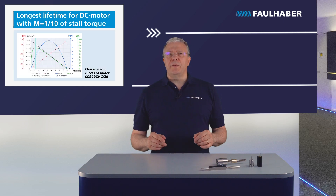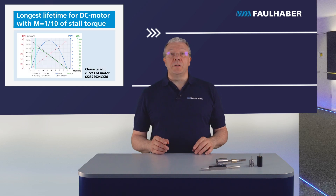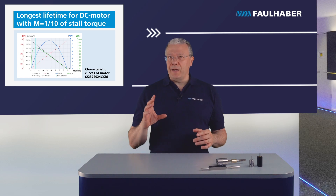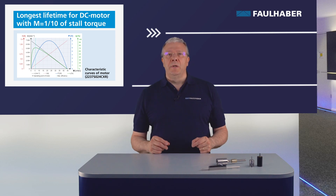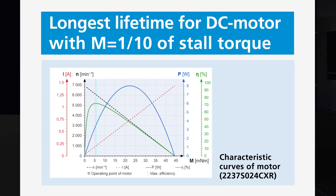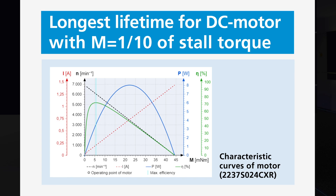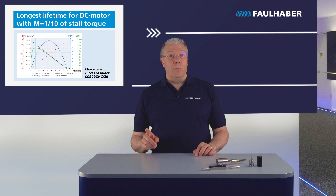The longest service life for DC motors is achieved with direct DC voltage connection. Looking at the motor curve diagram, there is a region around one-tenth of the stall torque value where the motor efficiency is at its maximum. Operating in this region gives the longest motor life.